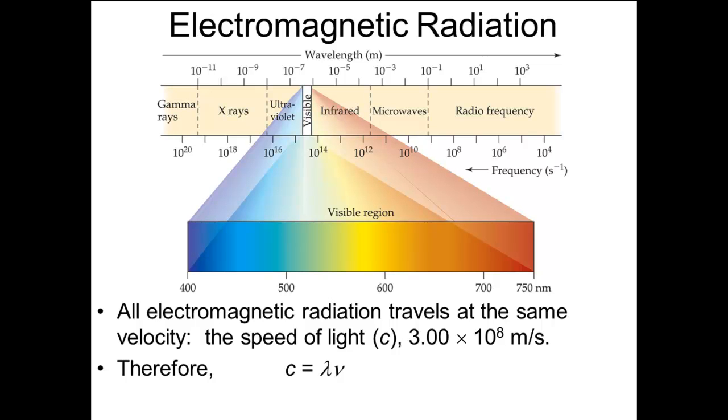So the speed of light, C, is equal to the wavelength of the light, lambda, times the frequency of the light, nu.